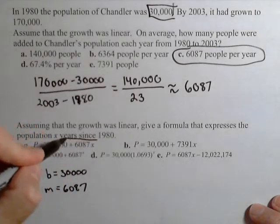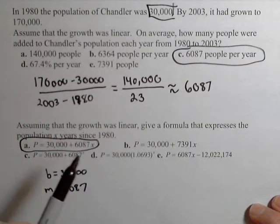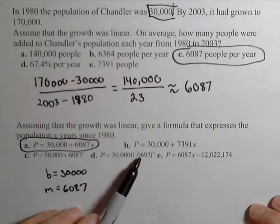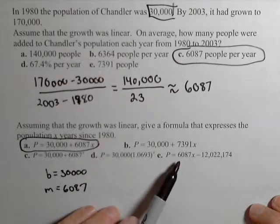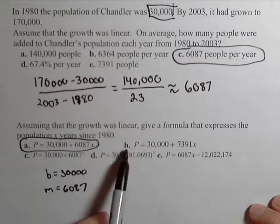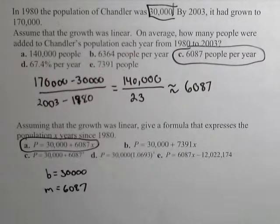So it has to be a. Notice, c is not linear, d is not linear, it's exponential, p is linear, but they subtract off the initial amount, and b has the wrong slope. So our answer is a.